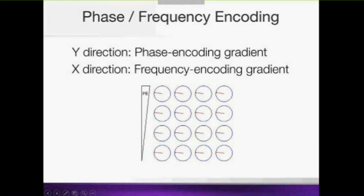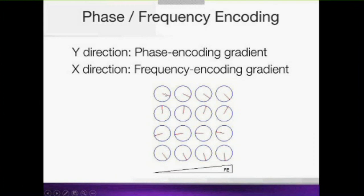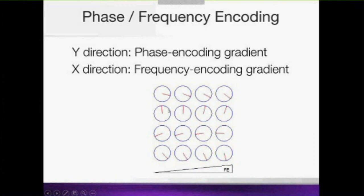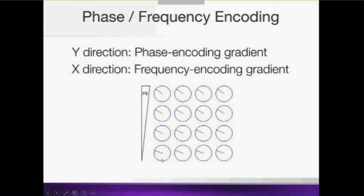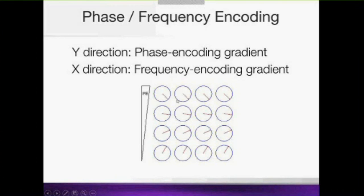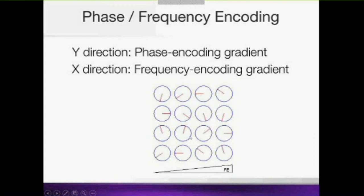To localize the signal within the slice, think of the spins as clocks all starting at the same time. We first apply a phase-encoding gradient, which makes spins in one direction precess faster temporarily; when we remove it they all return to the same precession speed but are now at different phases — like clocks set to different times. We then apply a frequency-encoding gradient in the perpendicular direction, which makes spins precess at different speeds. At the end we have encoded both phase and frequency, and that is how we localize the MRI signal in two dimensions within the slice.